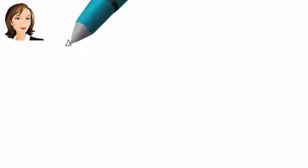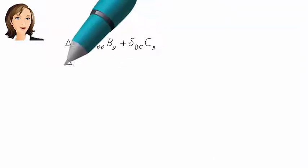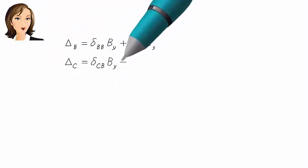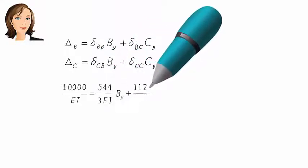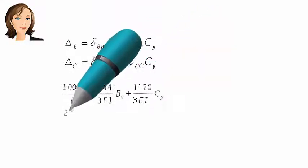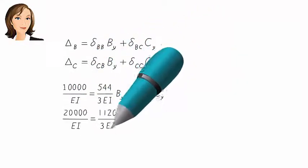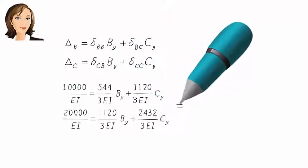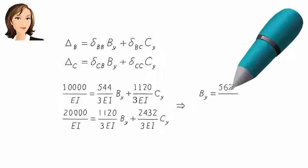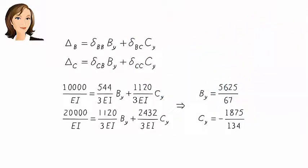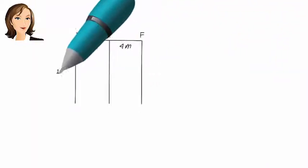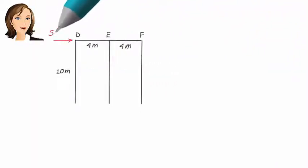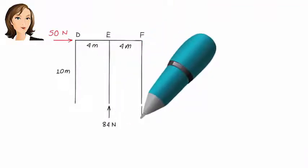Now we can write our compatibility equations and solve them for the redundant forces. The remaining unknown reaction forces — there are three of them — can now be calculated easily using the equilibrium equations.